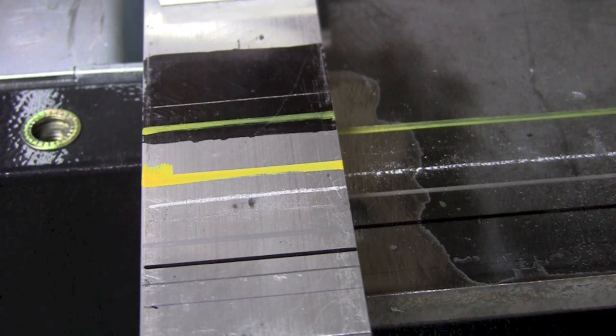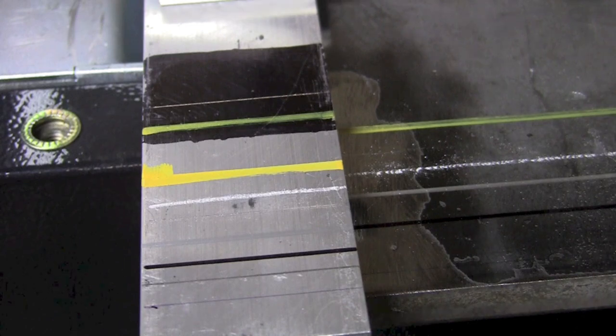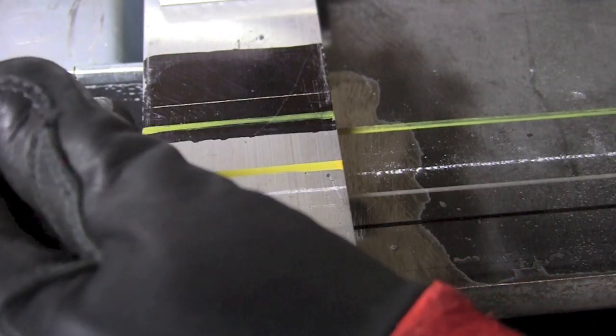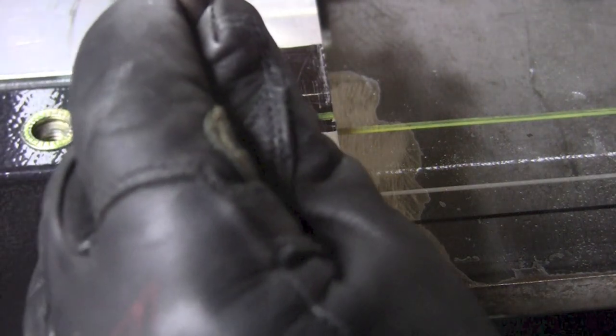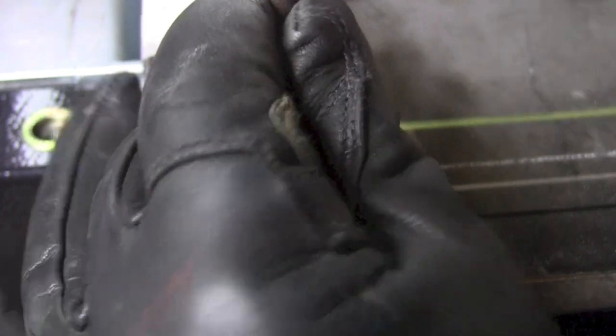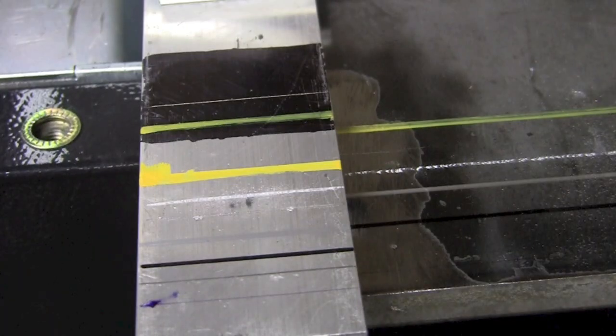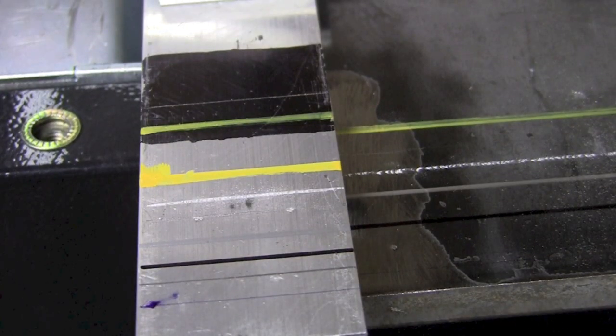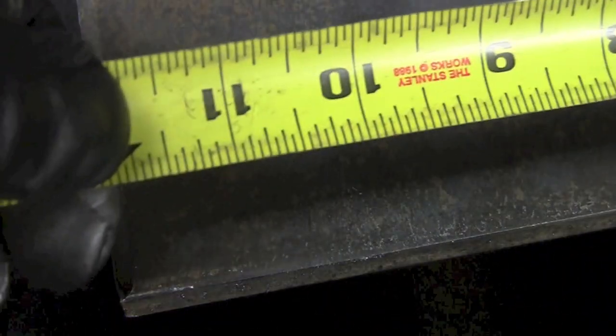Then the last thing we're going to do here is we're going to get that center punch again. We're going to come back and pick one of our lines, and we're going to permanently mark two prick marks on there, or sometimes people like to call them witness marks, and locate theirs on the plate there so it's permanently marked or permanently affixed.